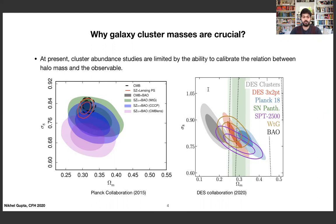The y and x-axes in both plots are sigma8, which is the normalization of the matter power spectrum, and omega matter, which is the matter density of the universe. When you add galaxy cluster cosmology, add BAO, and then do mass calibration using weak lensing — the 'Weighing the Giants' sample, CCCP sample, or CMB lensing — you see a shift in sigma8. Similarly, on the right with DES clusters, you see a shift in omega matter to a lower value compared to other experiments. The possible culprit in both cases is the mass calibration.